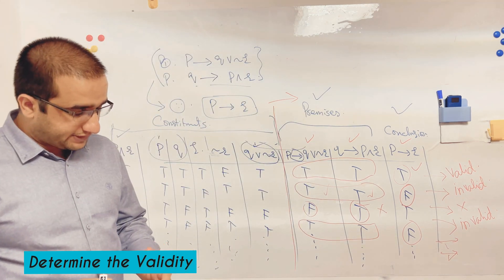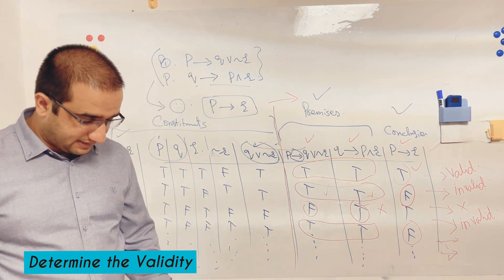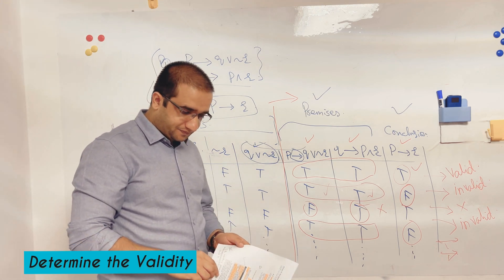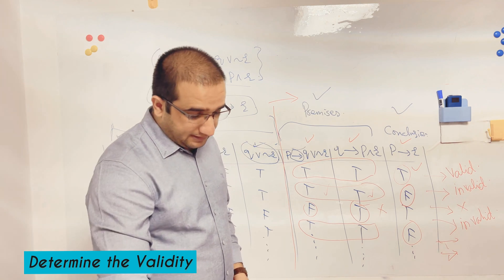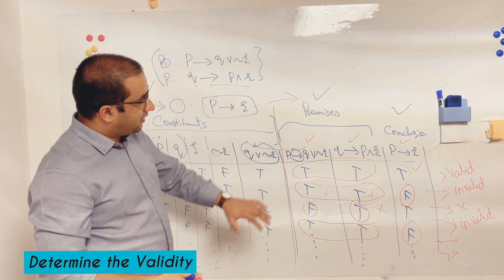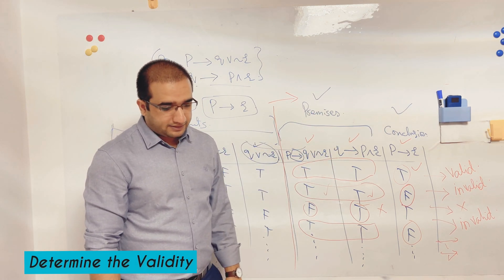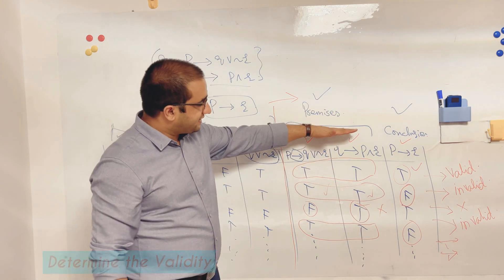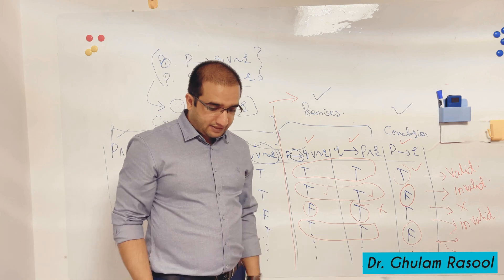So you understand how and which rows will be discussed under the category of validity or invalidity. Keep in mind that validity is only discussed when all the premises satisfy the definition of a critical row. If the premises are not following the definition of a critical row, we do not talk about validity.